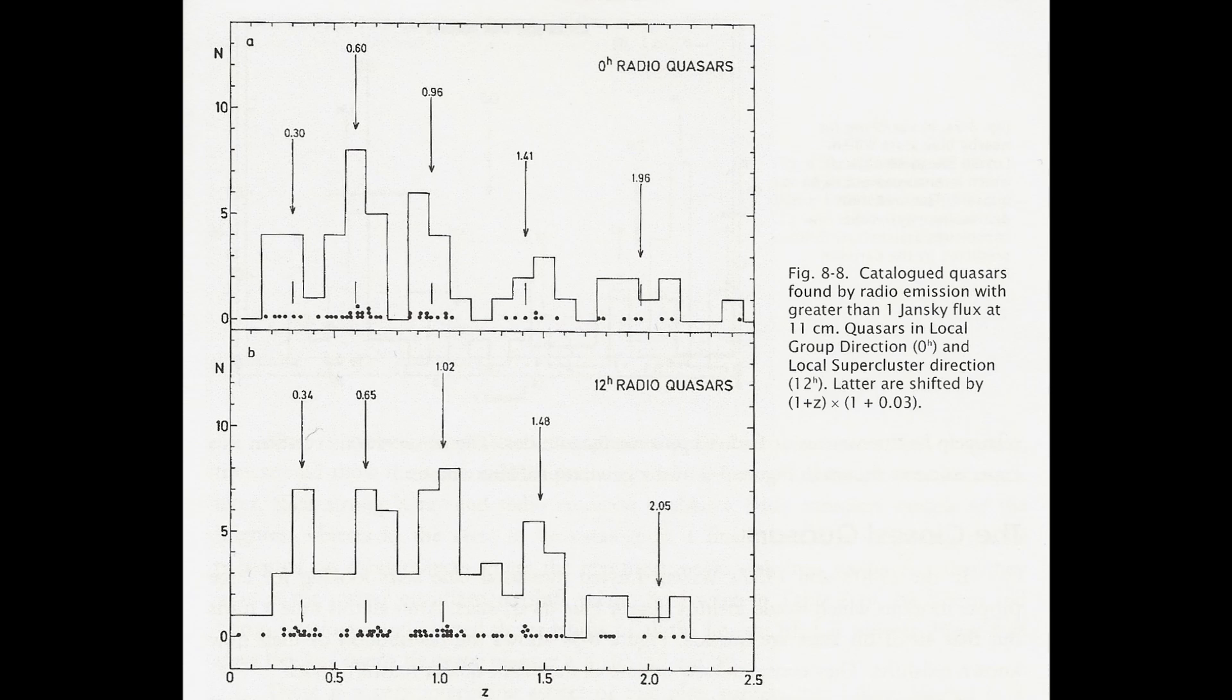If we examine the entire catalogue of z greater than 1.3 quasars in the 0 to 12 hour region this periodicity disappears. This is often what is used to discredit the whole concept.